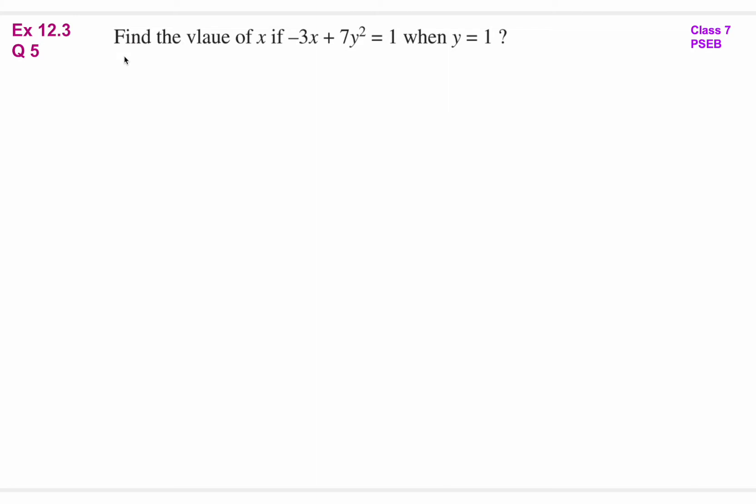Question number 5: Find the value of x if -3x + 7y² = 1 when y = 1. In this question, it's given that when y ki value is 1, then this expression ki value is 1. So for this condition, you need to find the value of x.